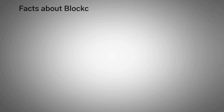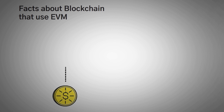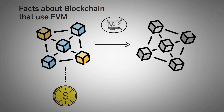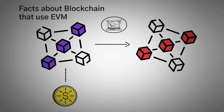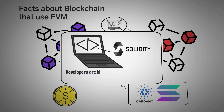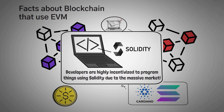One really interesting thing about blockchains that use the EVM is that it's really easy to move your projects and applications from one chain to another if they both use the EVM. This means if you have an application on Polygon, it's very easy to move it over to Phantom, Avalanche, or Ethereum. You could move your project around where your customers are most likely to be. This is unlike Cardano or Solana, which use Rust. Developers are highly incentivized to program things using Solidity due to the massive market they could reach just by migrating their app from one chain to another.